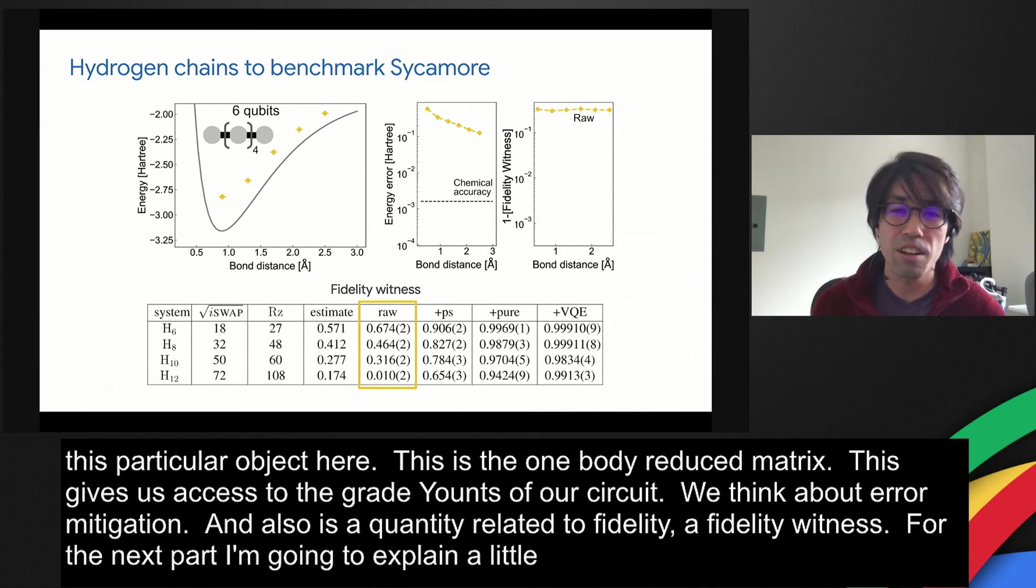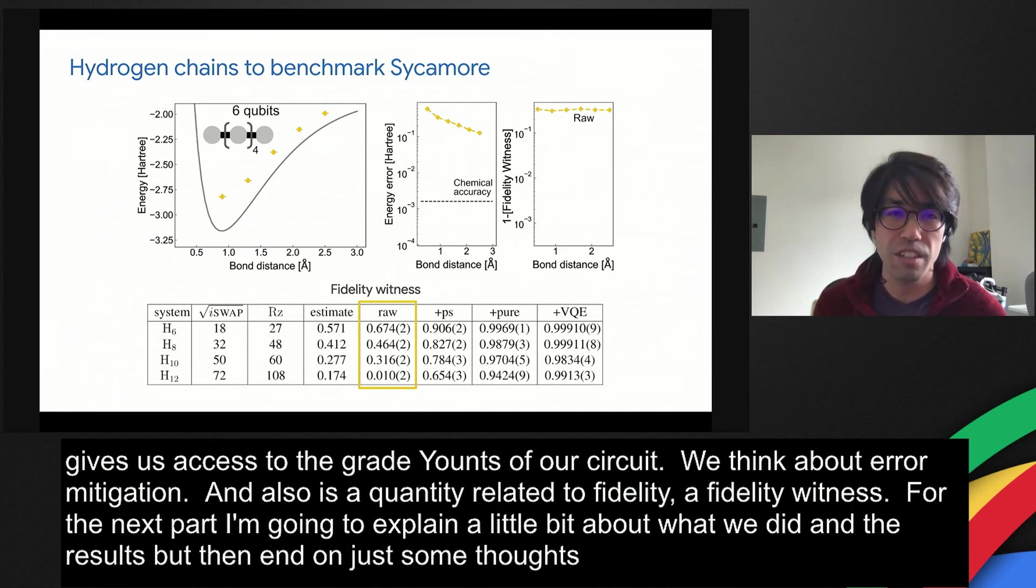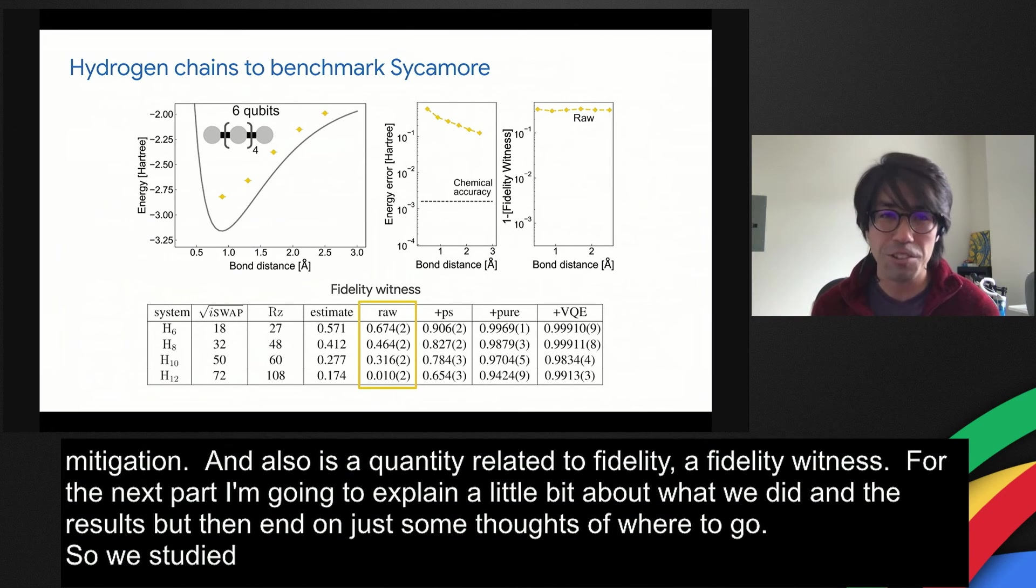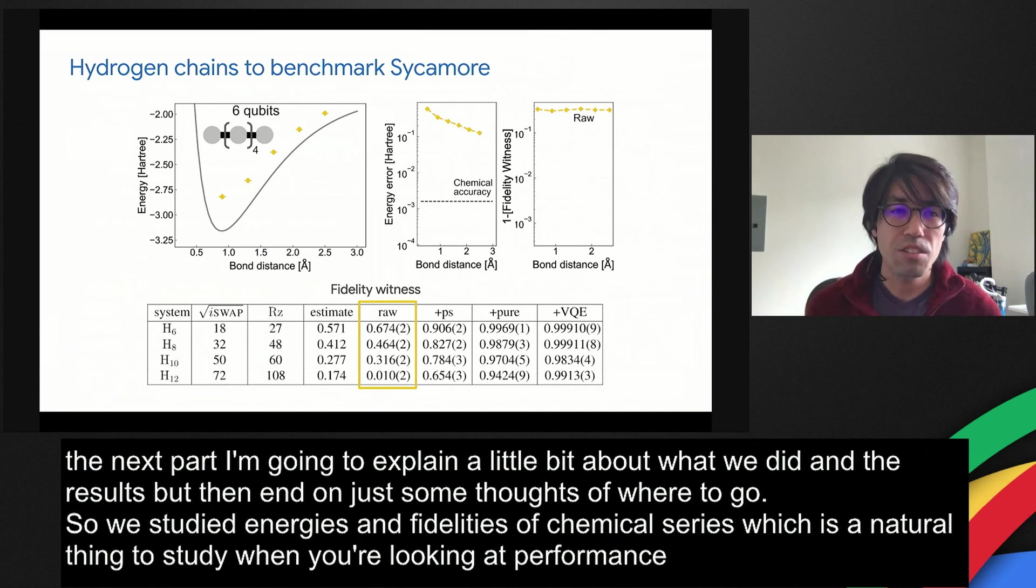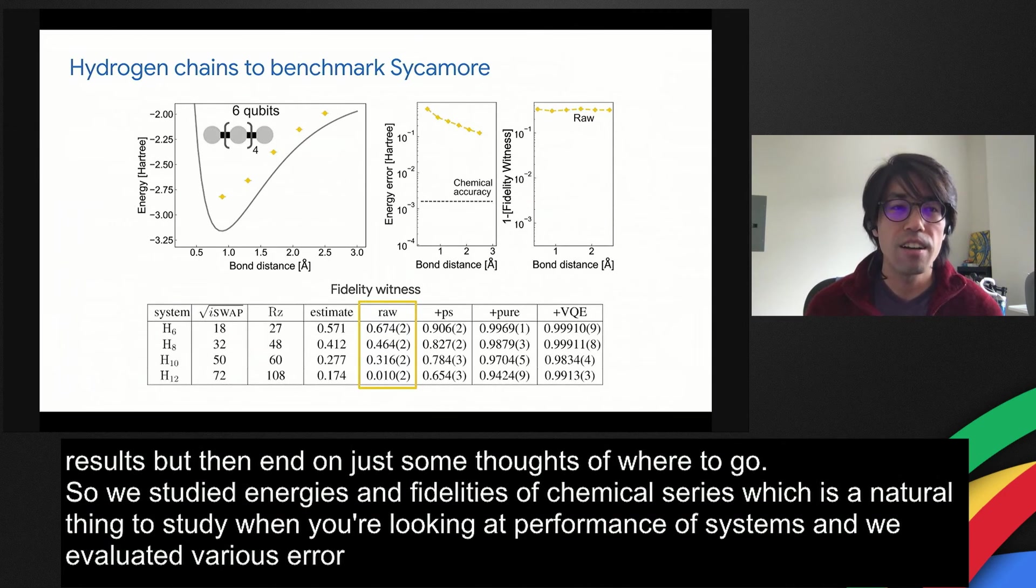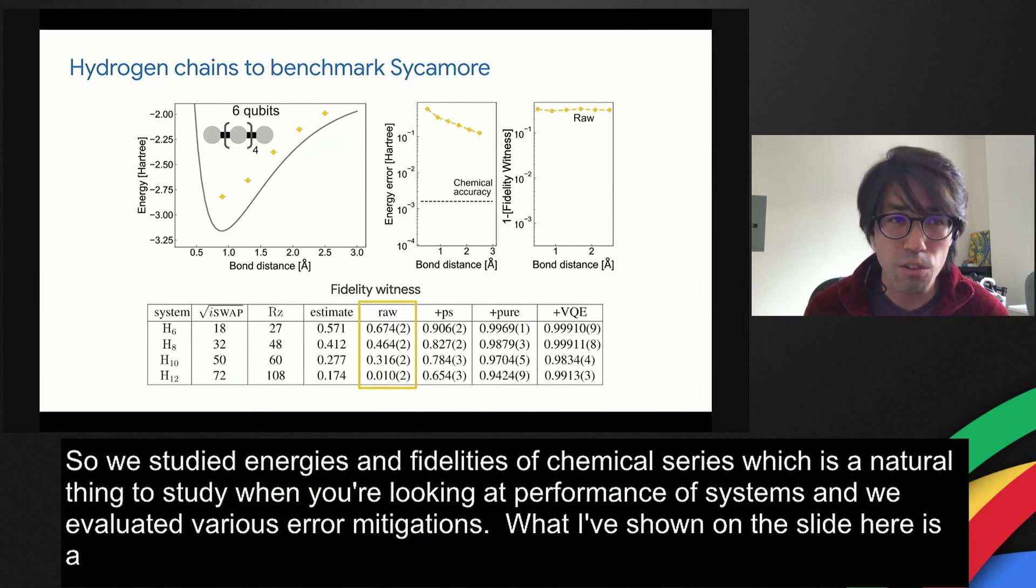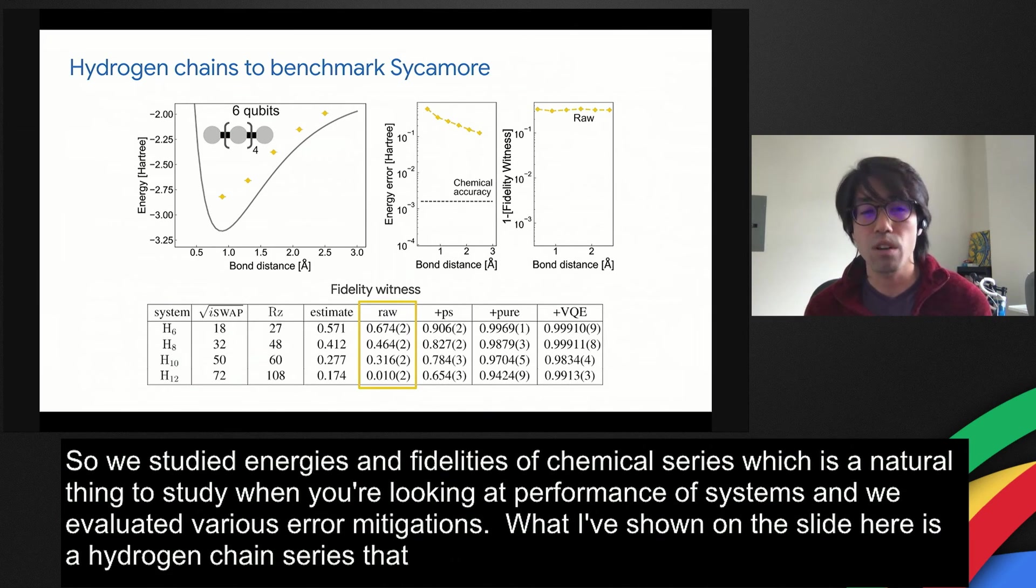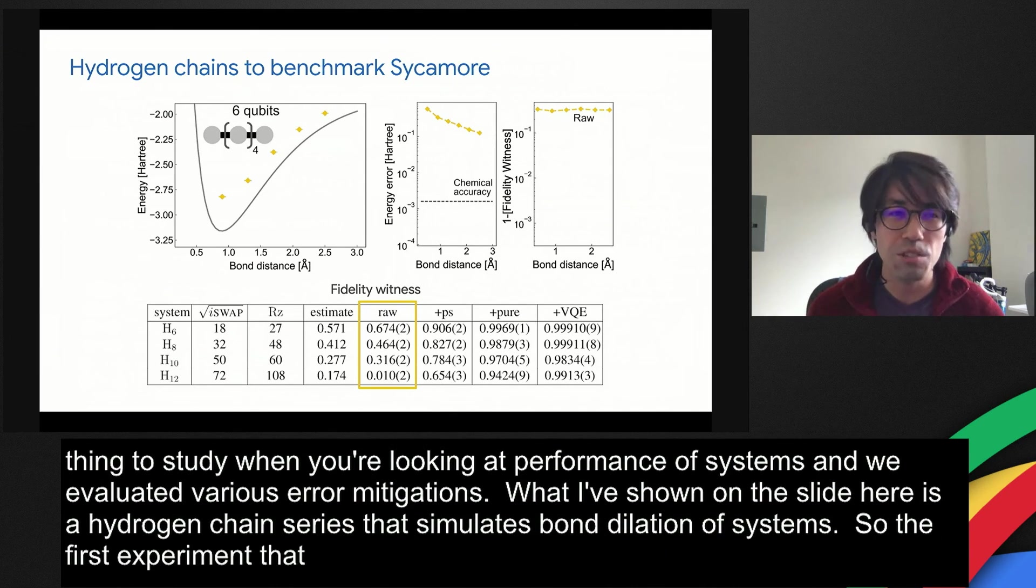For the next part, I'm going to explain a little bit about what we did and the results, but then end on just some thoughts of where to go. We studied energies and fidelities of chemical series, which is a natural thing to study when you're looking at performance of systems. We evaluated various error mitigation schemes. What I've shown on the slide here is a hydrogen chain series that simulates bond dilation of four systems of length 6, 8, 10, and 12 hydrogens.